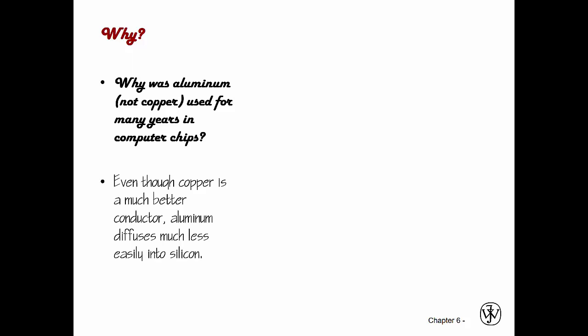The start of the answer is this. Even though copper is a much better conductor, and therefore it's going to run a lot cooler, aluminum diffuses much less easily into silicon. That is an issue, and we will answer why it's an issue later on.